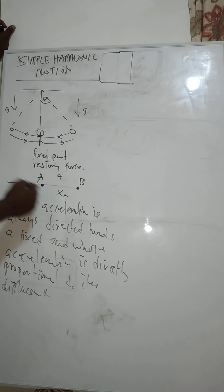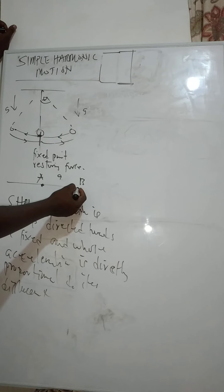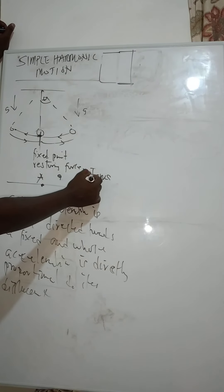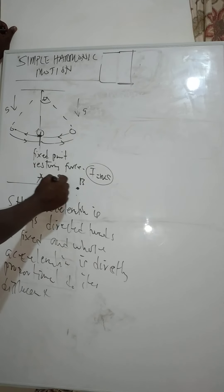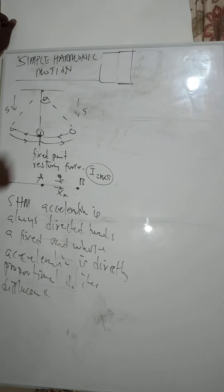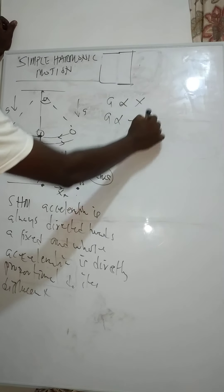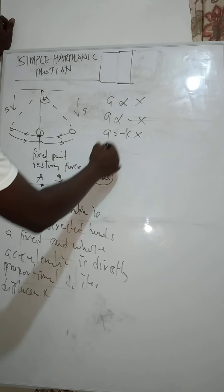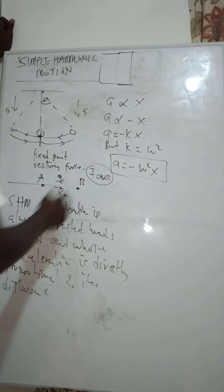From the examples given, the body moves through a certain displacement but there is a restoring force bringing it back to its original position. Since F = ma, the acceleration provides the restoring force. The displacement and acceleration are in opposite directions, so the acceleration is proportional to negative x. Therefore a = -kx, and since k = ω², we get a = -ω²x.